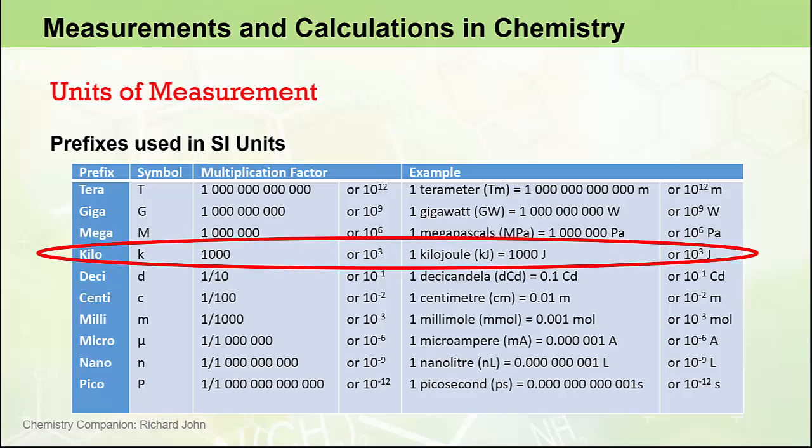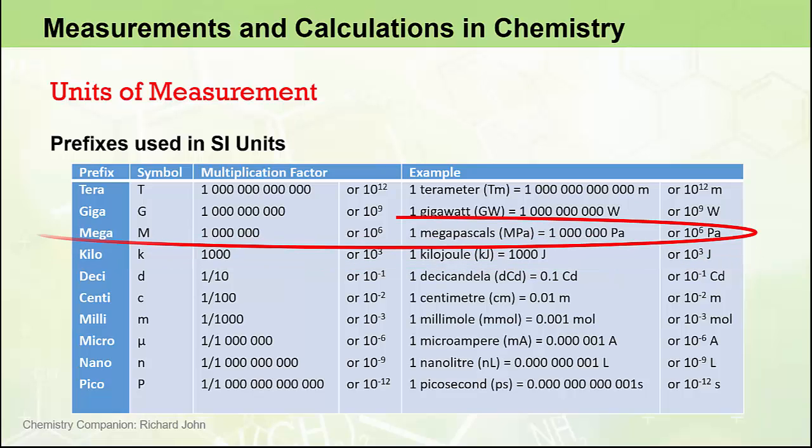At the other end of the table, we have kilo, lowercase k, meaning a thousand times, or a multiplier of one-thousand. We've got mega, capital M, referring to a million times.